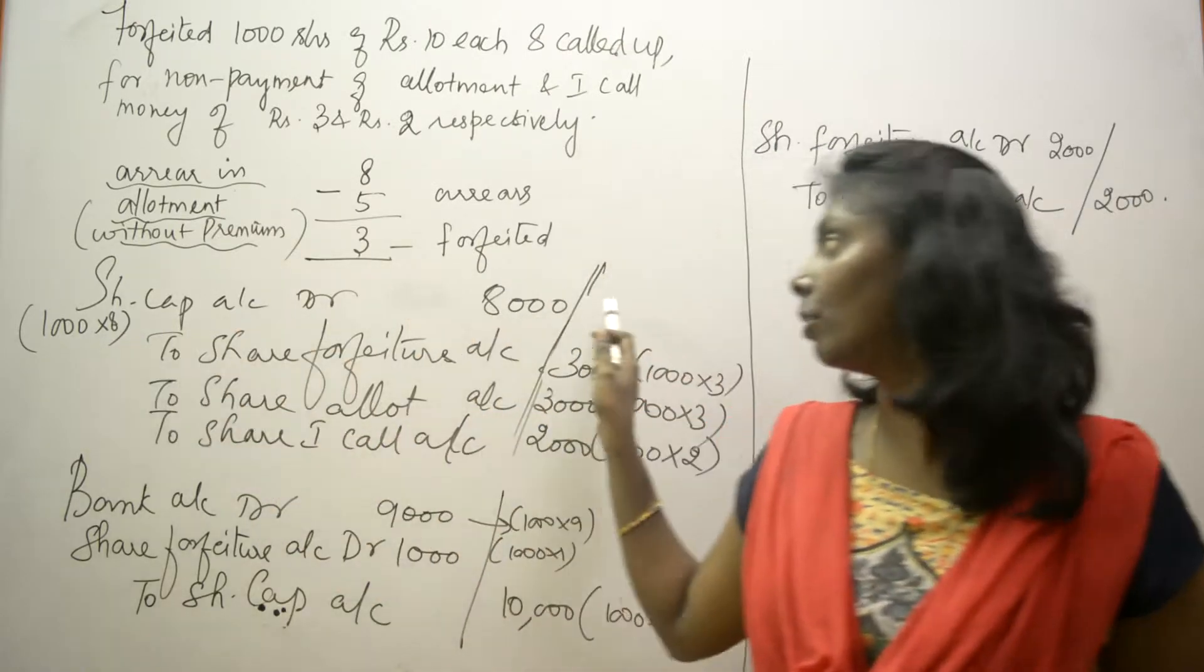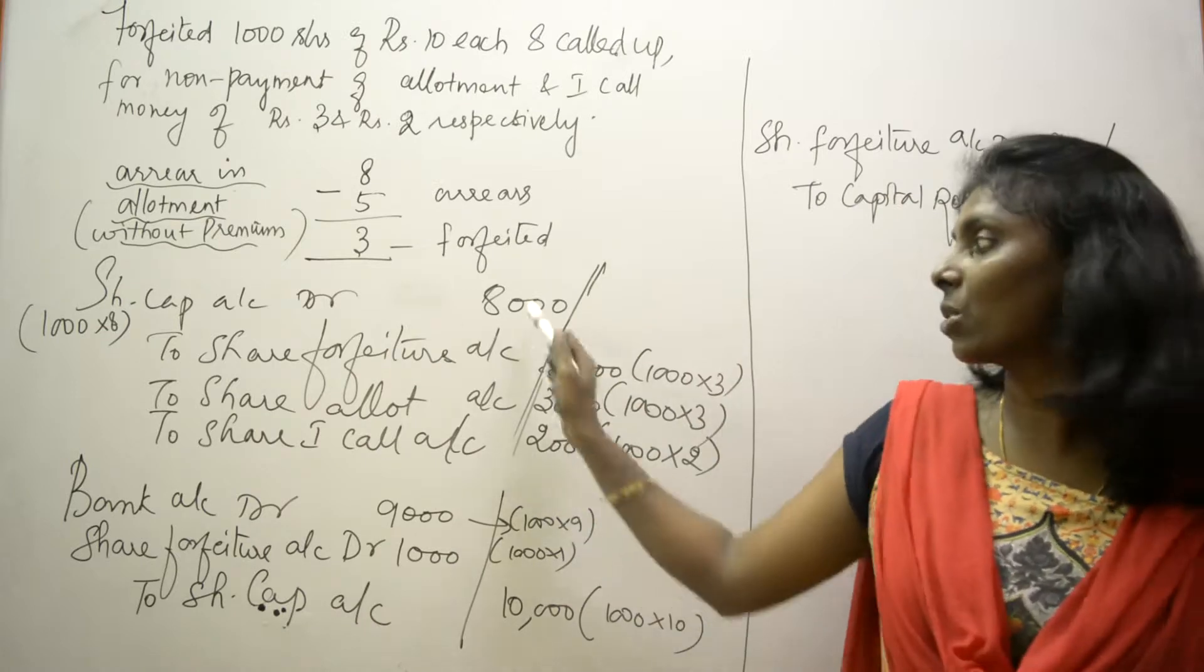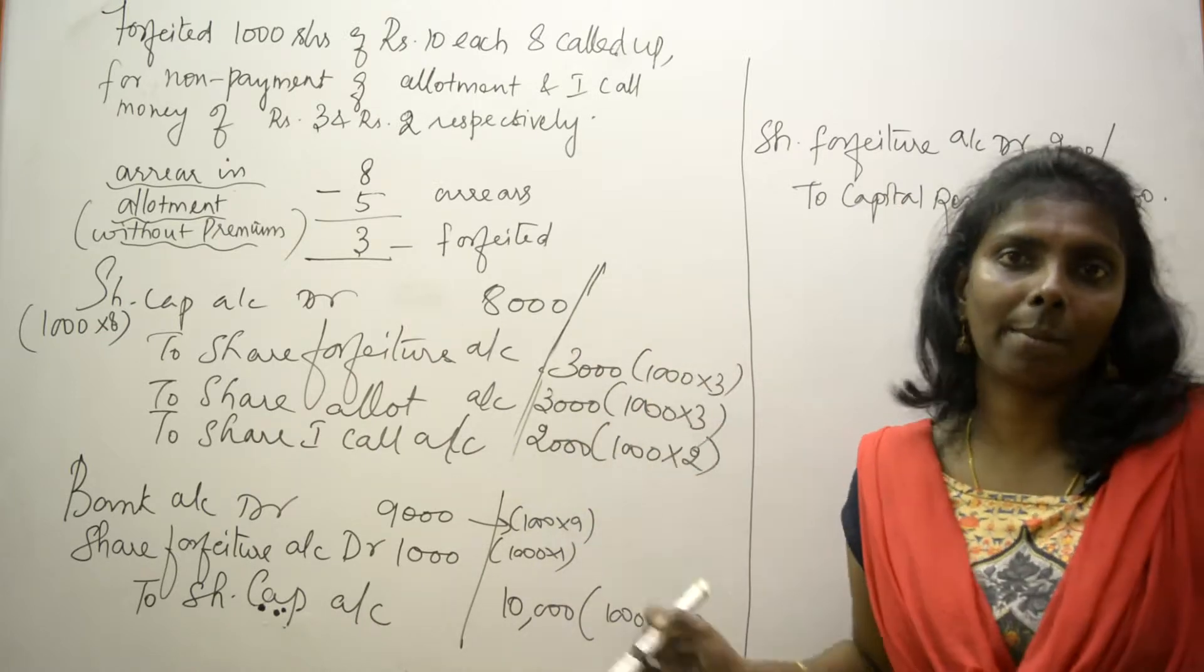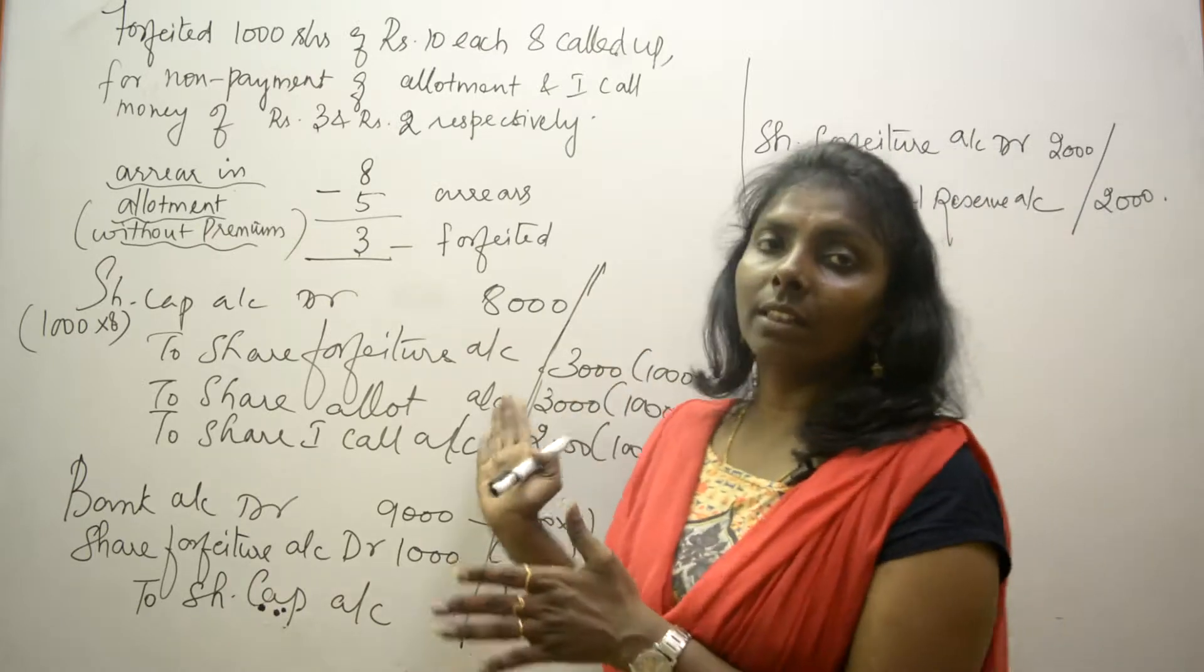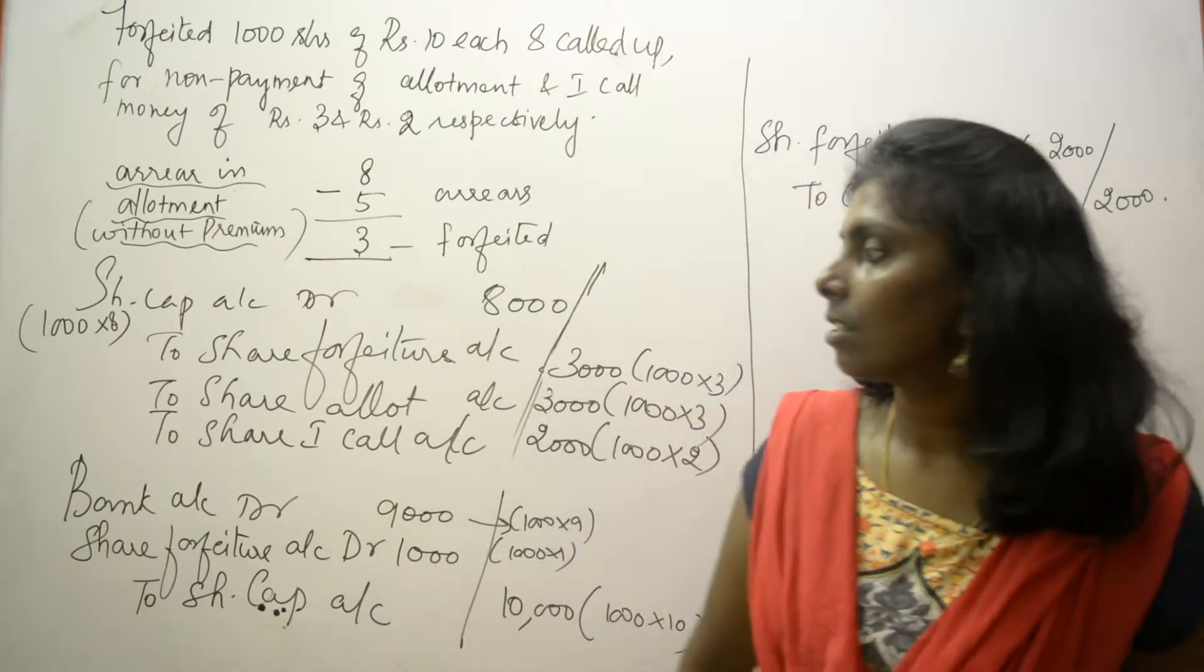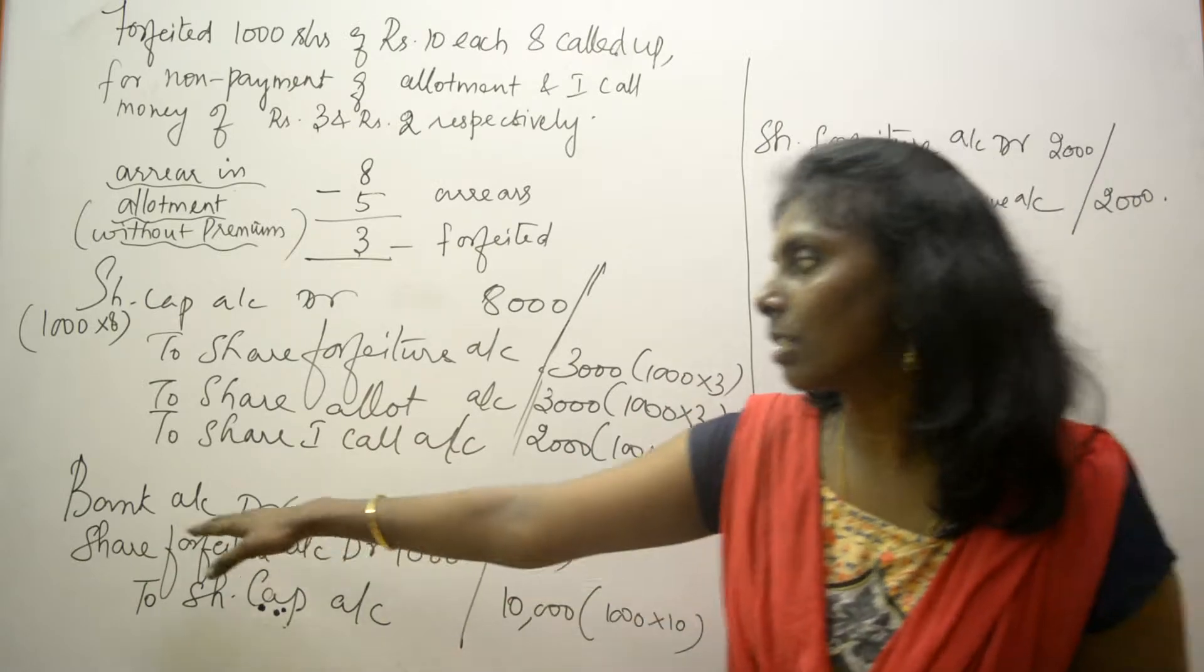But how will I double check my amount is correct? The called up is only 8 rupees, so 1000 into 8 called up should be share capital, so it matches with this. Now I know that my entry is right. Now I am reissuing the same number of shares for rupees 9.